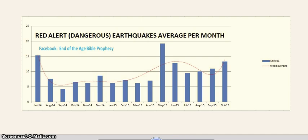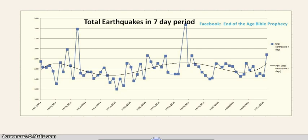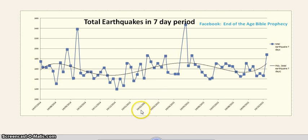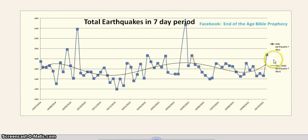This next graph runs from July 2014 until the present time and shows the total earthquakes in the past seven-day period — all earthquakes, regardless of magnitude, reported by the USGS in the past seven days. The reading is taken each day and it's very volatile, but the trend line shows that the 4th and 5th is when Saturn buzzed us. We've come down and are now coming back up again in the past couple of weeks.